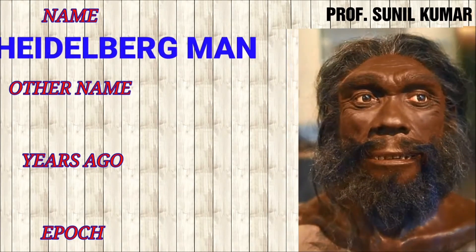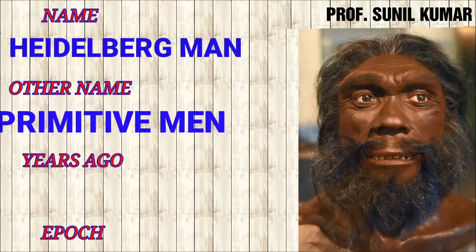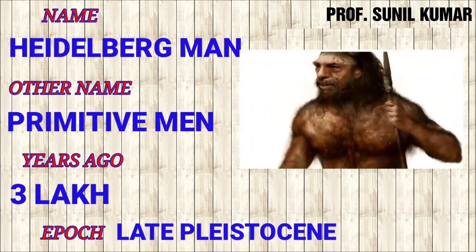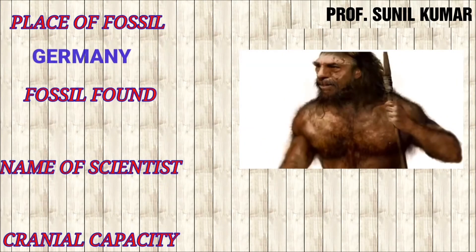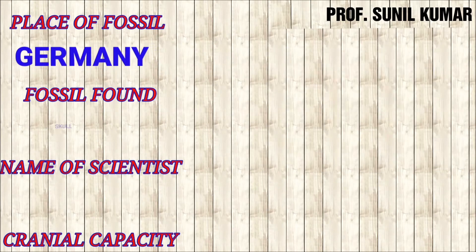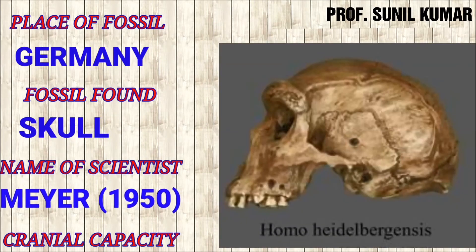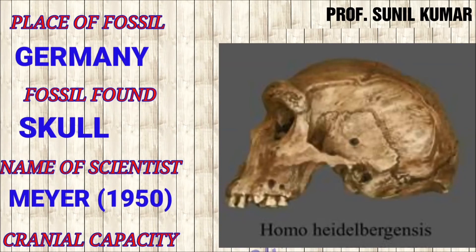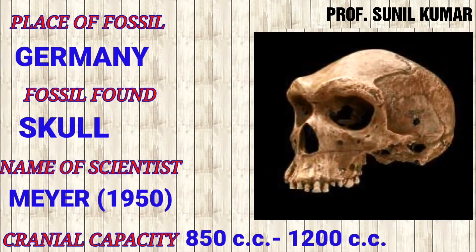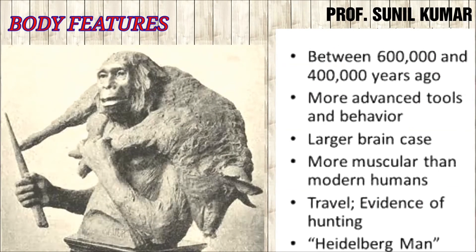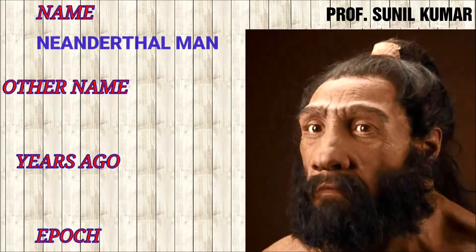The next stage is Heidelberg man, also called primitive man — purely towards the men's side. They lived 3 lakh years ago and were found in the late Pleistocene epoch, with the majority of characteristics similar to modern men. The fossil was found in Germany and was a skull. The scientist who discovered it was Mayor in 1950. Cranial capacity was around 850 to 1200 cc. Body features: more muscular than modern men, expert in hunting, and used tools in a wise way.